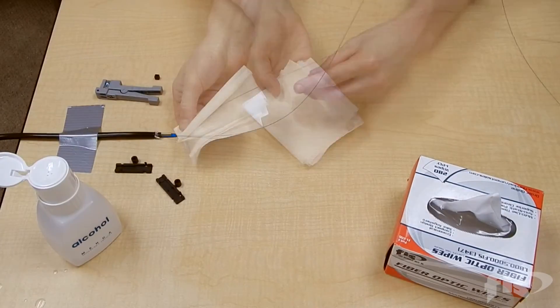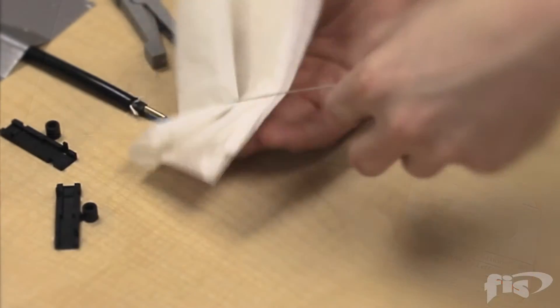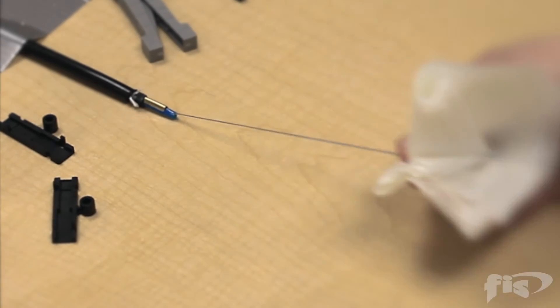After the Icky Pick is removed, use isopropyl alcohol and wipes to thoroughly clean all of the fibers. You should hear a distinct squeaking while cleaning.